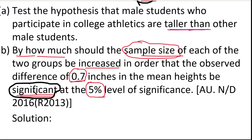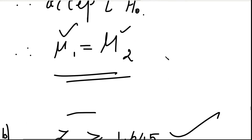We need a significant difference between mu1 and mu2. For significance, the calculated Z must be greater than or equal to the table value of 1.645. So we set up the inequality: (x1-bar - x2-bar) / sqrt(s1²/n + s2²/n) ≥ 1.645. We assume n1 = n2 = n and x1-bar - x2-bar = 0.7.